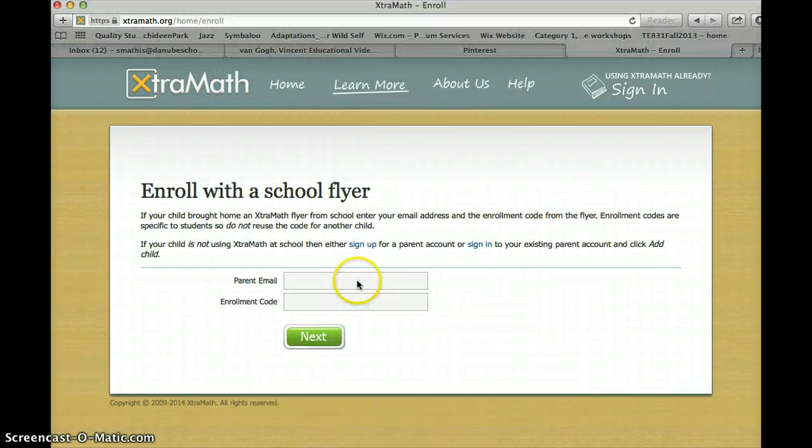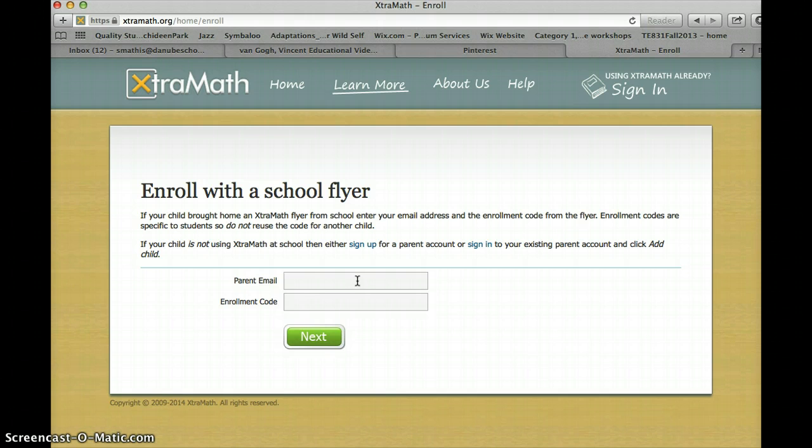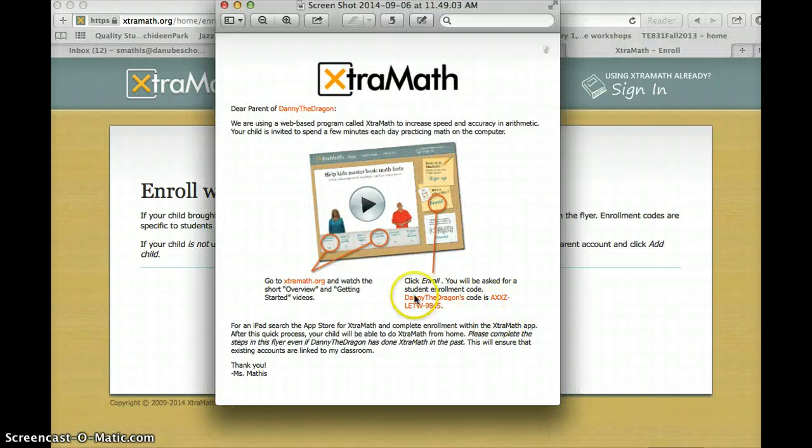Right here, you're just going to type in your parent email address. This email is where your student's PIN code and reports will be sent. You will also need the enrollment code. Again, the enrollment code was located right here on that parent flyer that was sent home with the handbooks.